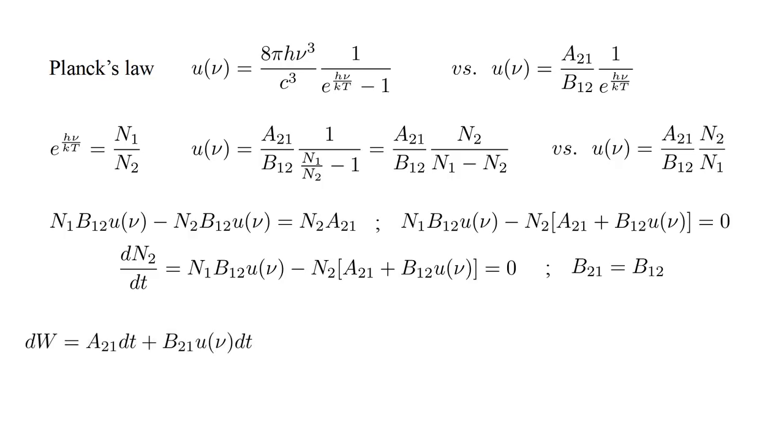Then the terms in brackets imply that the probability that an atom in state two will undergo emission during a time dt has two contributions. The first term we call spontaneous emission. It's independent of the radiation density, that is, it doesn't require the presence of photons. It's what we originally assumed was the only emission process. The second term we call stimulated emission. It's proportional to the radiation density, so like absorption, it only occurs in the presence of photons. Photons are required to stimulate this type of emission. We see that the form of Planck's law requires that such a process must exist.